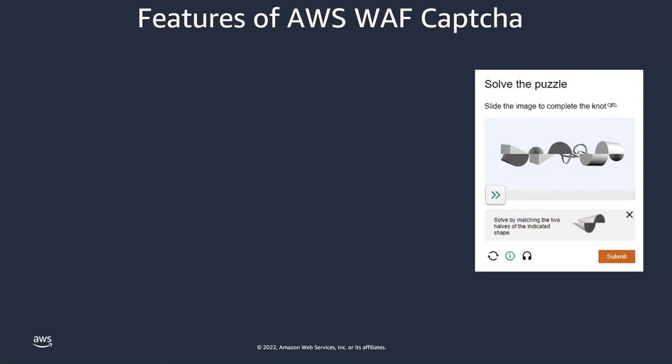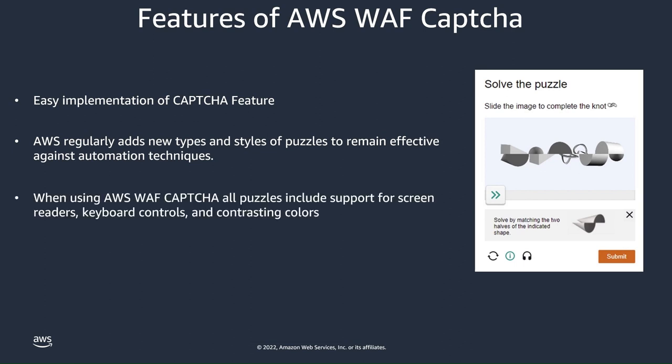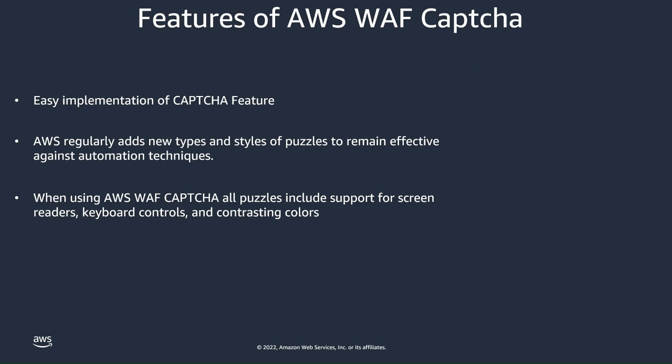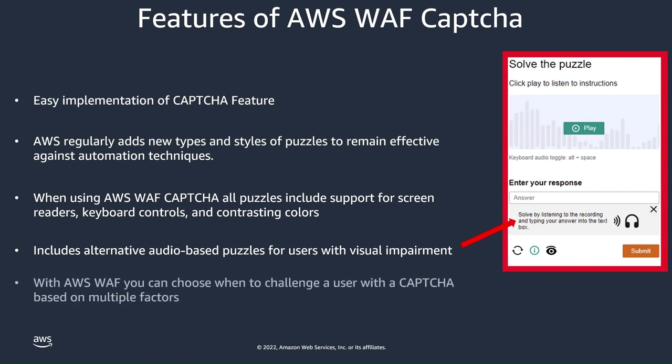Additional benefits that come along with using the AWS WAF CAPTCHA feature include easy implementation. AWS regularly adds new types and styles of puzzles to remain effective against automation techniques. When using AWS WAF CAPTCHA, all puzzles include support for screen readers, keyboard controls, and contrasting colors. It also includes alternative audio-based puzzles for users with visual impairments.